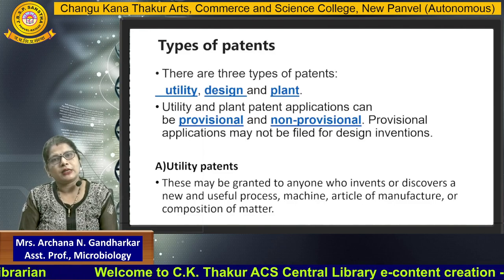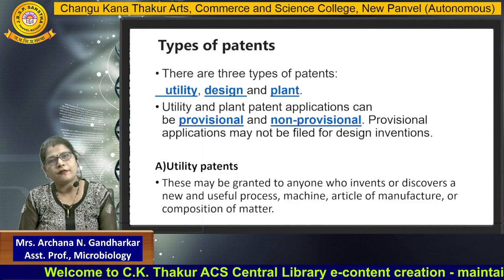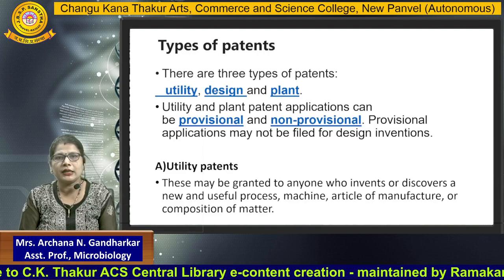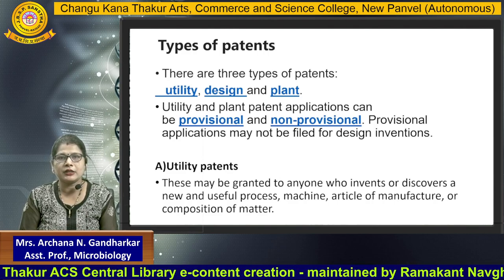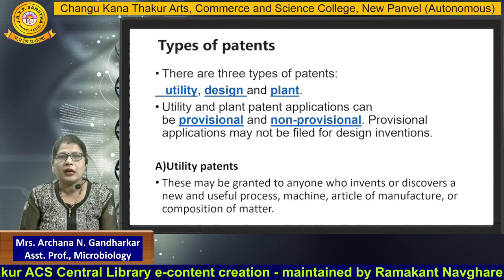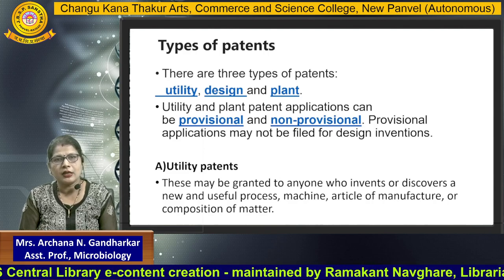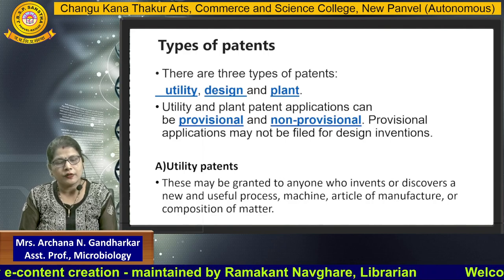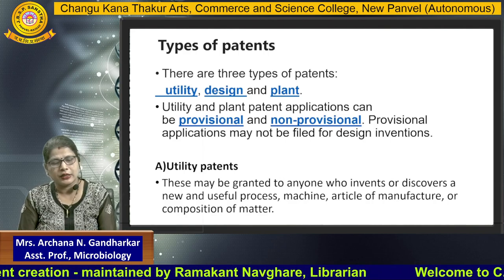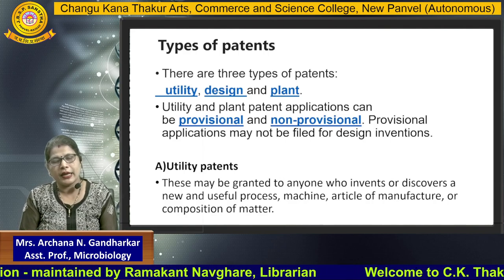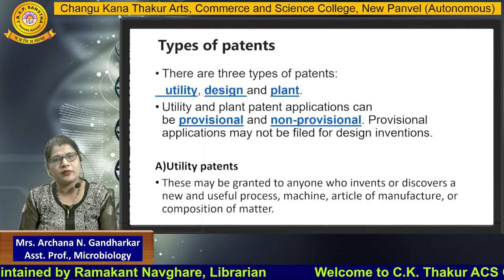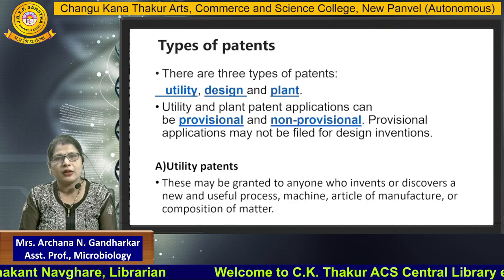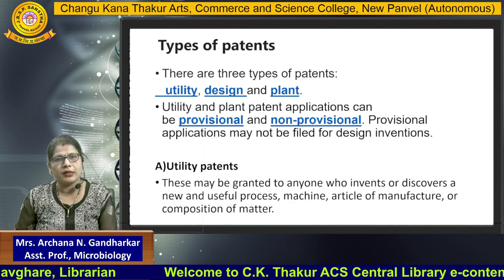Now, types of patents. There are two basic types of patents. First is a utility patent, design patent, and a plant patent. Utility and plant patent applications can be provisional and non-provisional. Provisional applications may not be filed for a design invention. A utility patent may be granted to anyone who invents or discovers a new and useful process, machine, article of manufacture, or composition of matter.